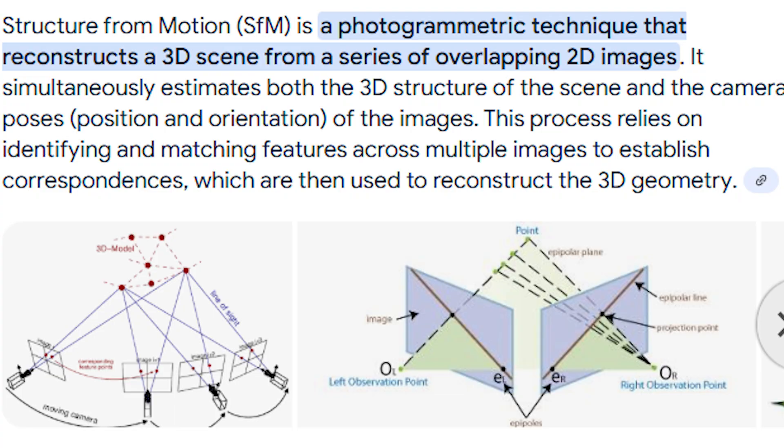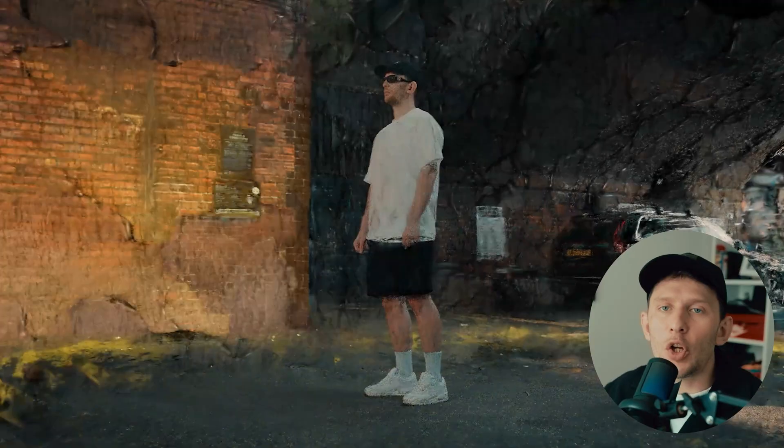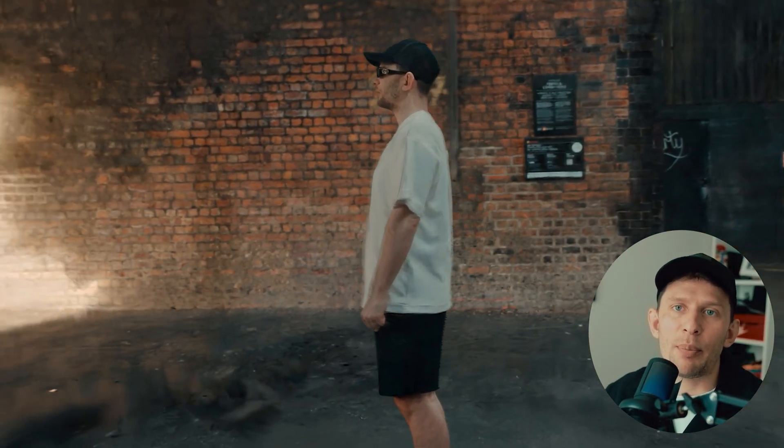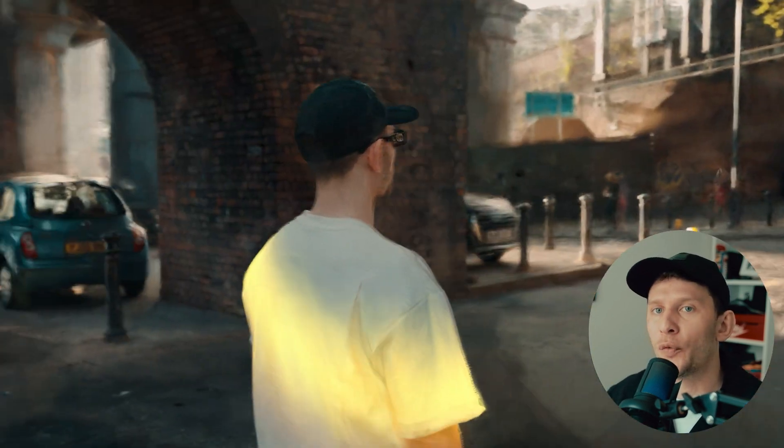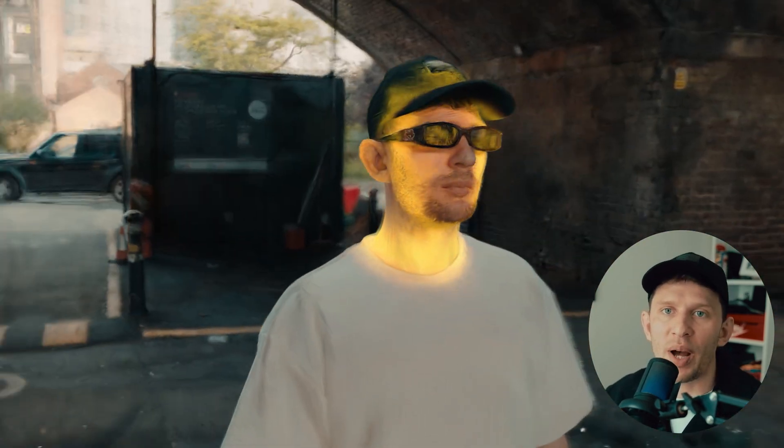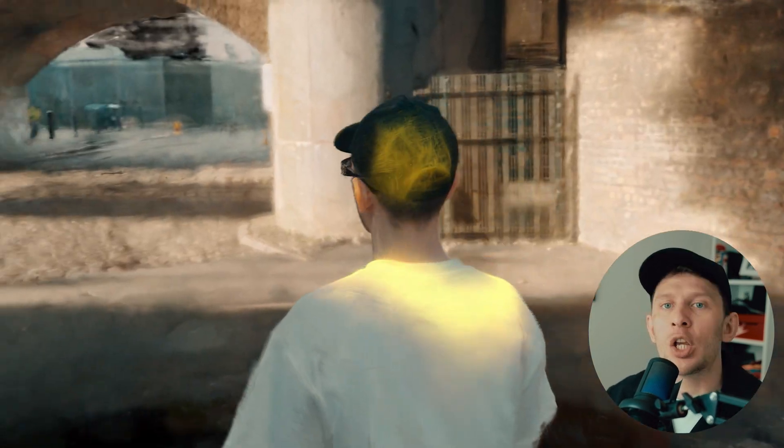Gaussian splatting is a technique similar to photogrammetry and lidar scanning. It uses a collection of points called 3D Gaussians to represent a scene, allowing for efficient and realistic rendering, especially in real-time environments. In this video we'll go step by step through how to create and visualize a Gaussian splat, so don't skip ahead or you might miss important steps.